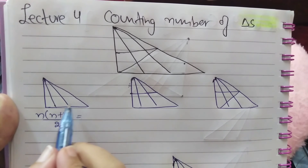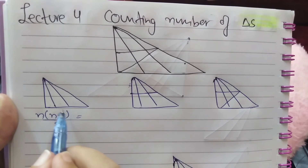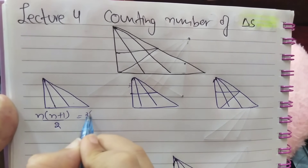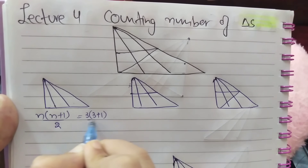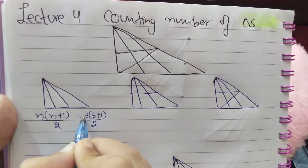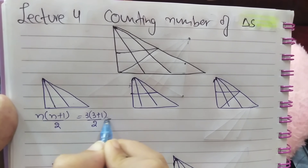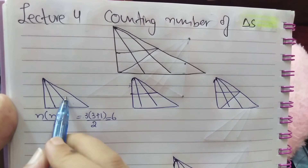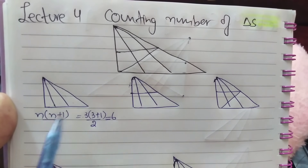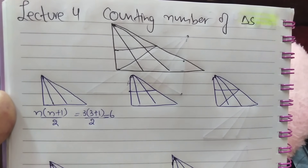What is n? n is the number of lines. Counting from the base: 1, 2, 3 — so n is 3. Applying the formula: 3 into (3 plus 1) divided by 2 = 3 into 4 divided by 2 = 12 divided by 2 = 6. So in this portion of the diagram, there are six triangles.